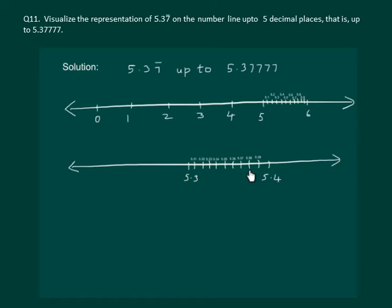So let us divide 5.37 and 5.38 into 10 equal parts and now our counting will start with 5.371 and so on. Now the required number will lie between 5.377 and 5.378.